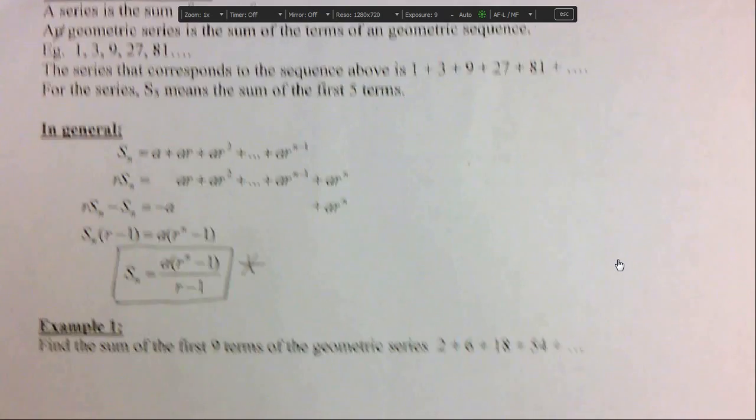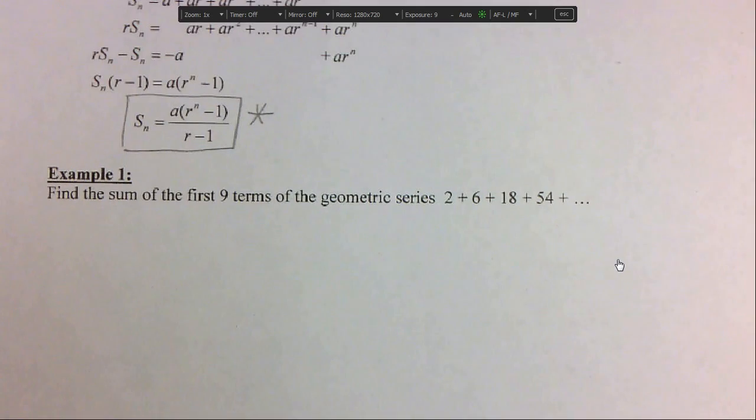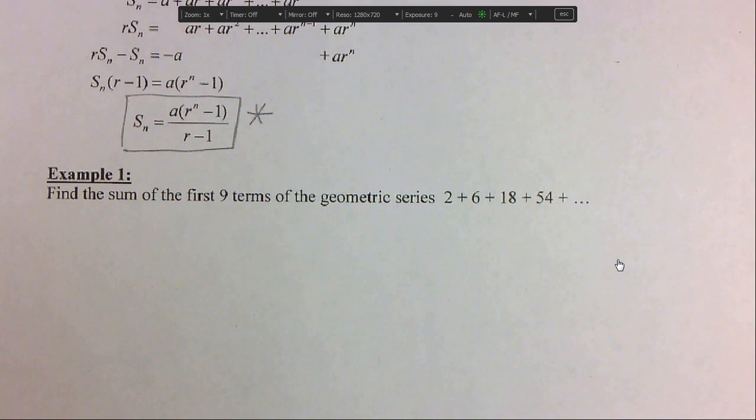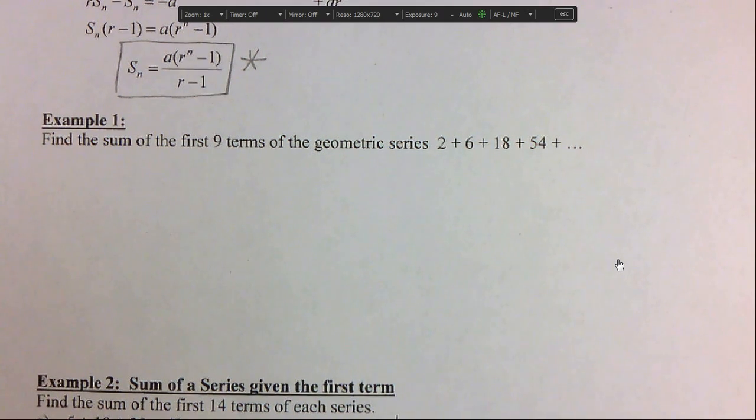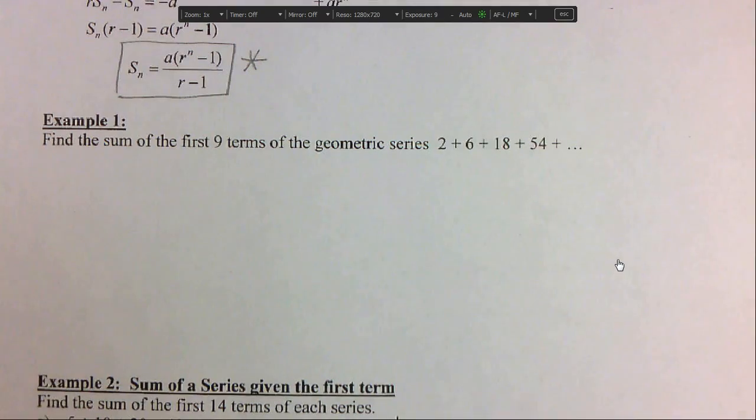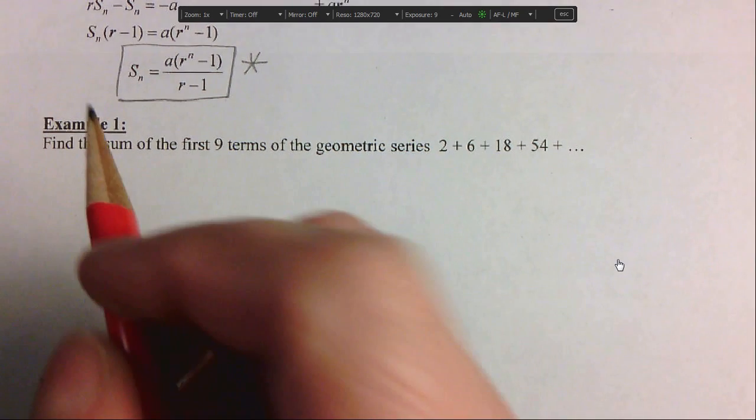That's the formula that we're going to be using: sn equals a times r to the n minus 1 over r minus 1. Let's look at example 1. Find the sum of the first nine terms of the geometric series.